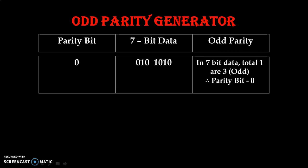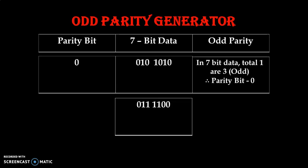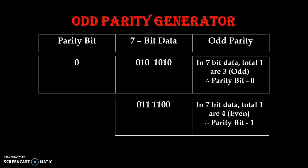Same way, if we take another example with the number 0111100 and analyze our 7-bit data, we know that the total number of 1s are 4, which is an even number. So in case of odd parity generator we have to make the total number of 1s an odd number. If we add 1 then it becomes 5, which is odd, so the parity bit will be 1.